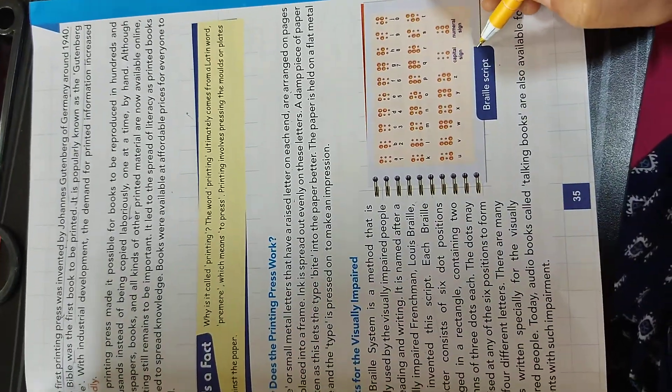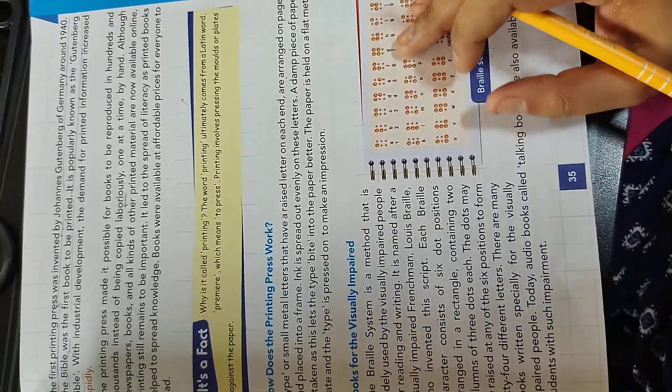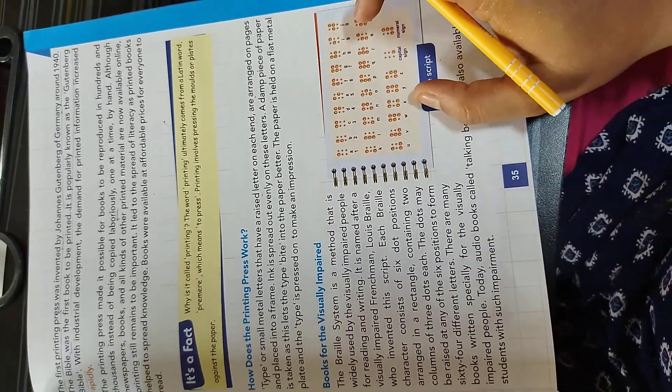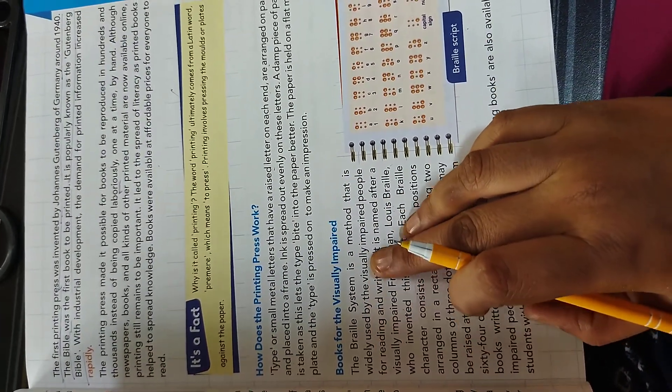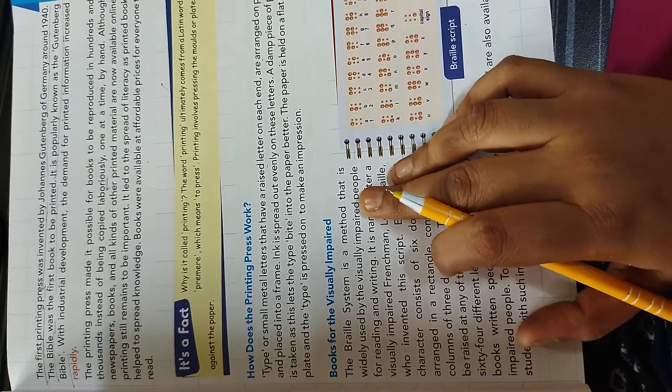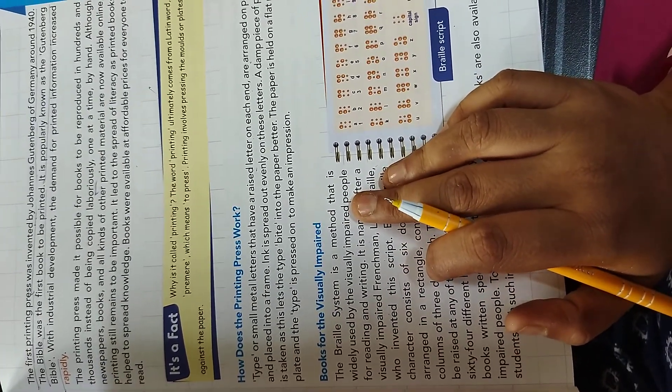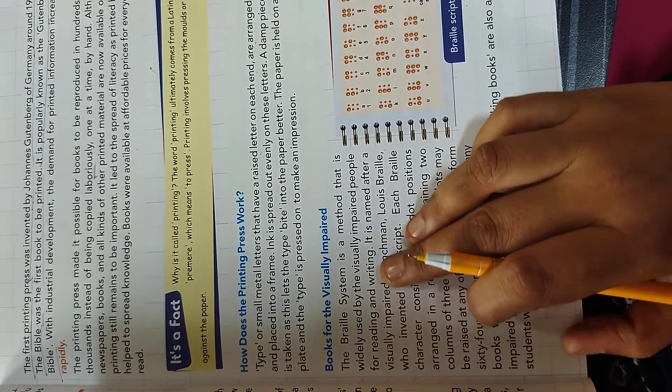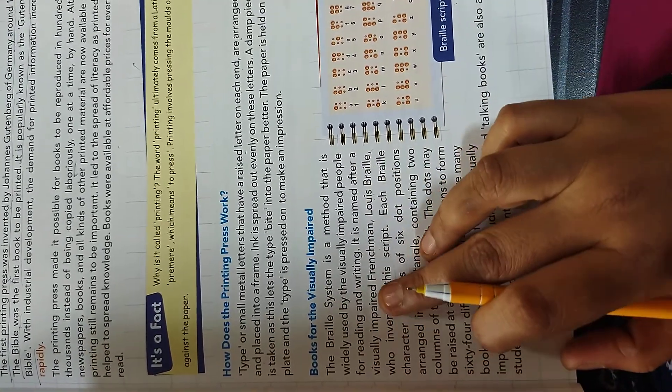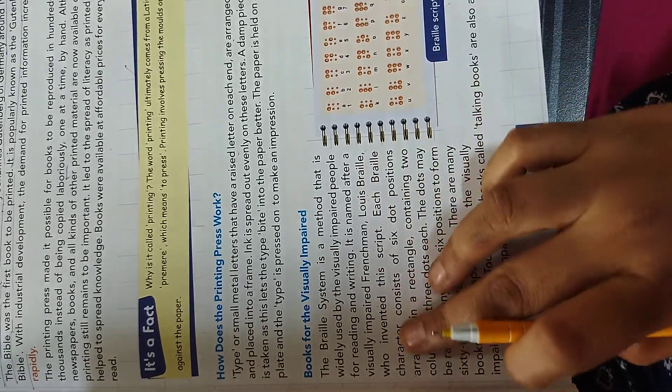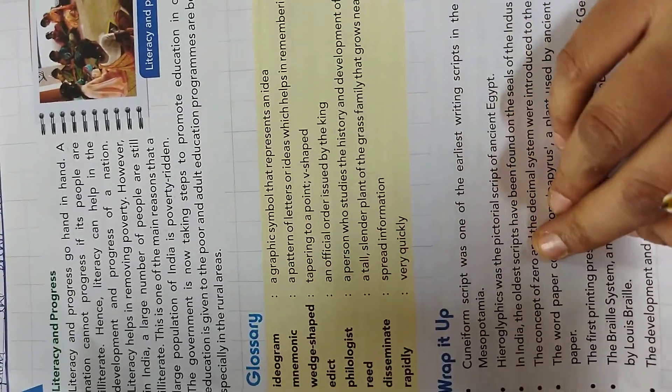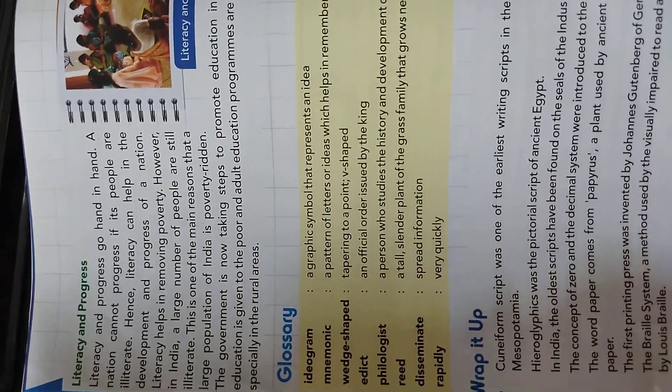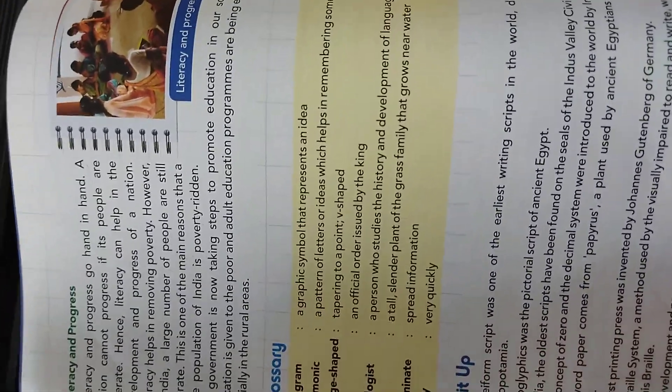Now, let's pick the next topic that is books for the visually impaired. This is a picture of Braille script. The Braille system is a method that is widely used by the visually impaired people. Impaired means disability or damage. For reading and writing, it is named after a visually impaired French man, Louis Braille, who invented this script. Now, the last topic that is literacy and program.